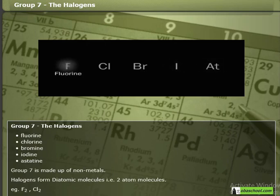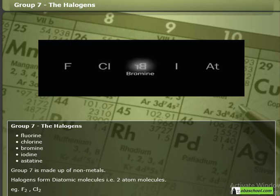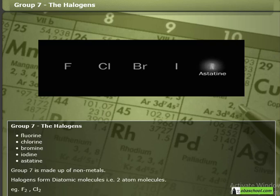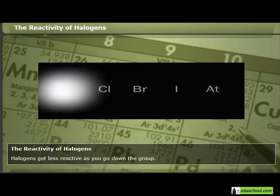Group 7 is made up of non-metals. Halogens form diatomic molecules, that is two-atom molecules, for example F2 or Cl2.